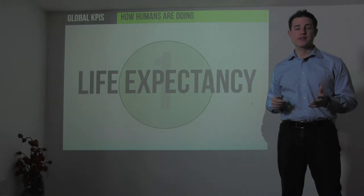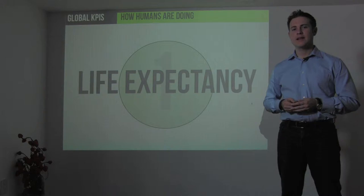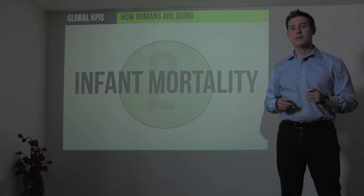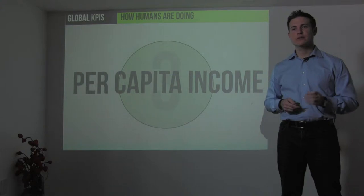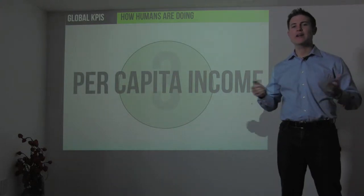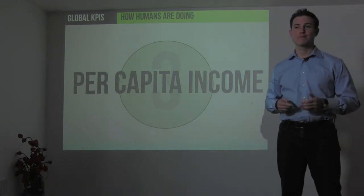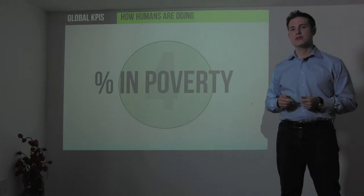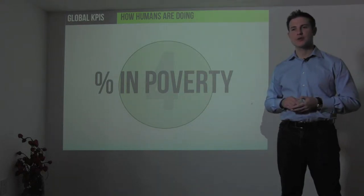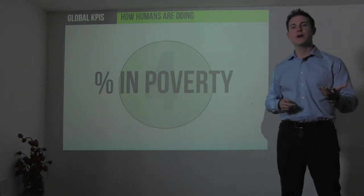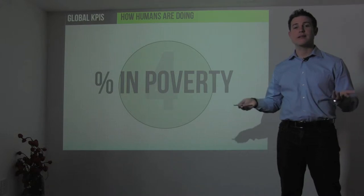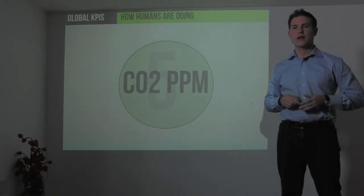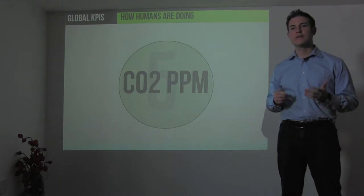First, let's look at life expectancy — how long an average person can expect to live. Next, let's look at infant mortality: the number of individuals under five years old that die before their fifth birthday. Next, let's look at per capita income — the average mean income throughout the world in terms of what someone makes per year. Next, let's look at the percentage in extreme poverty, defined as living under $1.25 per day, purchase power parity adjusted, so it's an apples-to-apples comparison anywhere in the world. And last, let's look at carbon dioxide — the parts per million of CO2 in the atmosphere — as a correlation with environmental progress as a species.